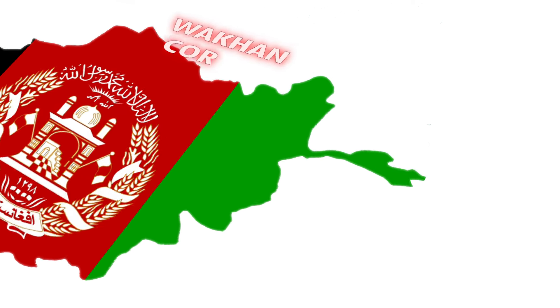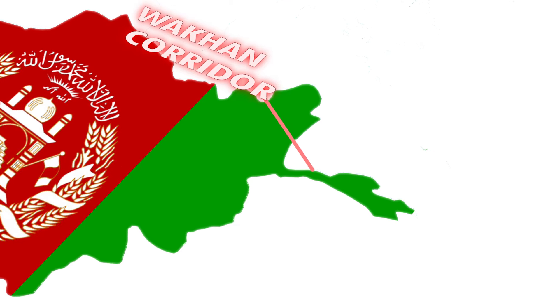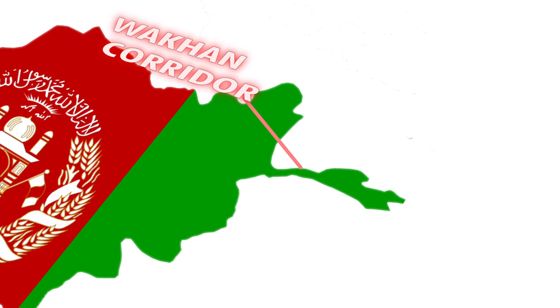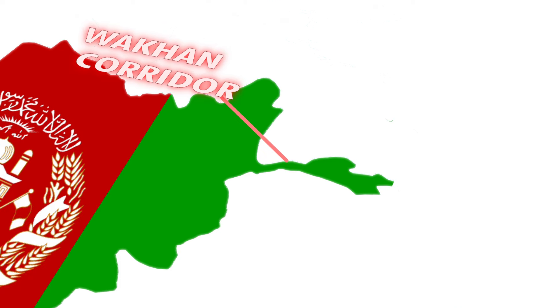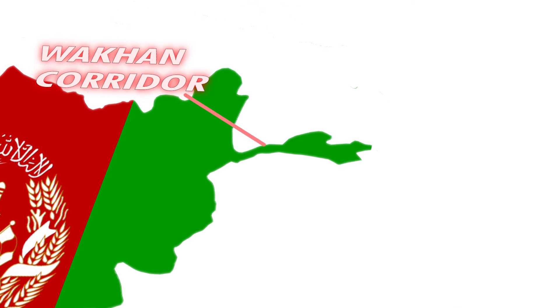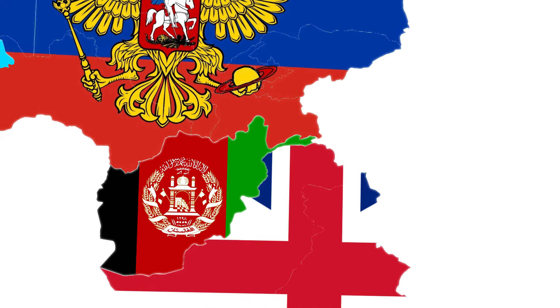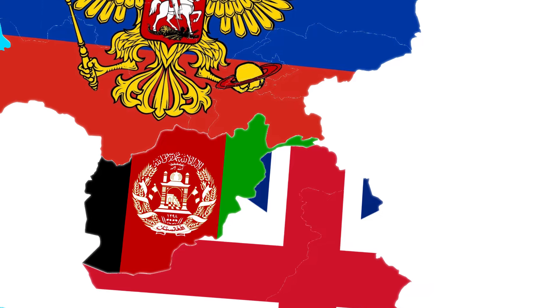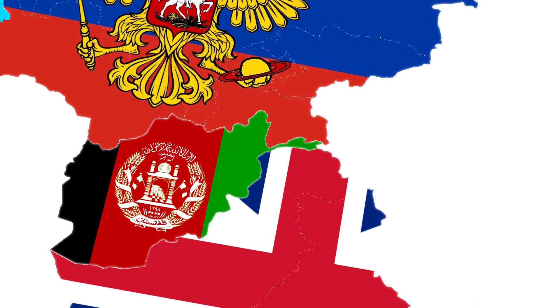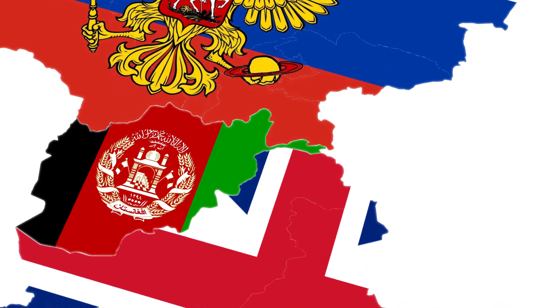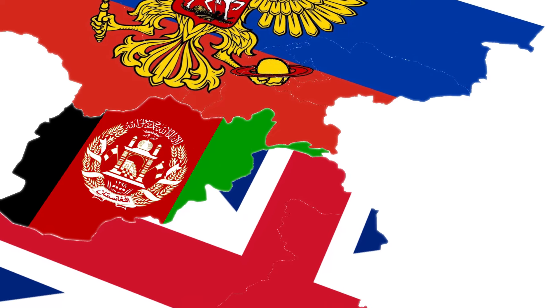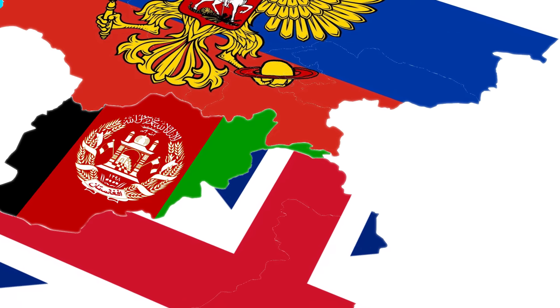Our next destination is Afghanistan, where the Wakhan Corridor extends 350 kilometers (220 miles) away from the rest of the country, with varying widths between 13 to 65 kilometers (8 to 40 miles). This seemingly inexplicable border was shaped by 19th-century geopolitical competition between the Russian and British empires. To avoid direct conflict, they expanded Afghanistan eastward to create a buffer state, resulting in the Wakhan Corridor that separates Tajikistan from Pakistan.